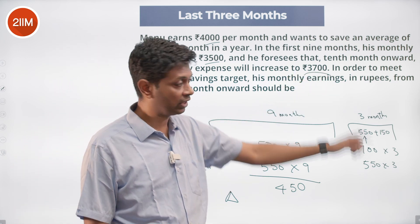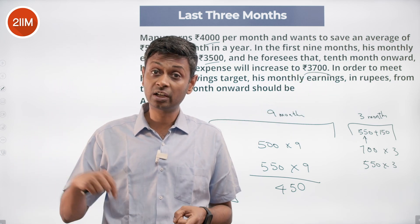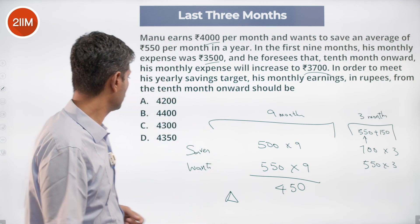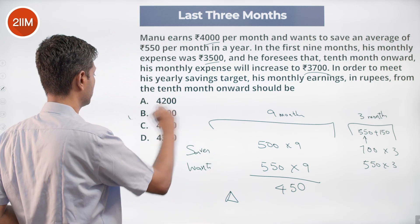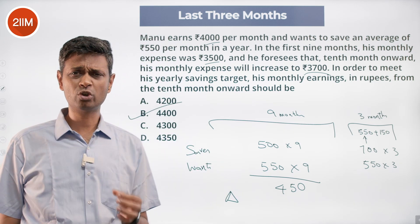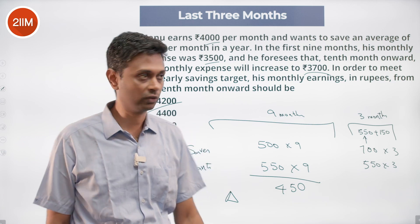He needs to save 700 rupees per month in the last three months. His monthly expense will go to 3,700, so his income should be 3,700 plus 700, which is 4,400. This is a straightforward question — just a matter of setting it up and knocking it down.